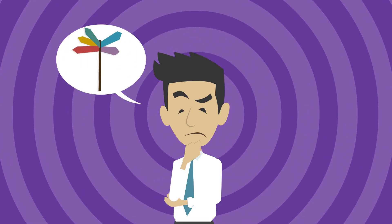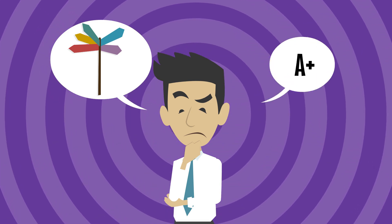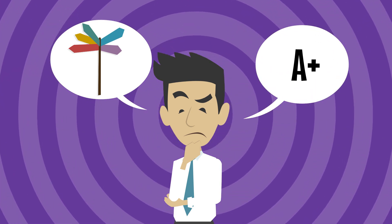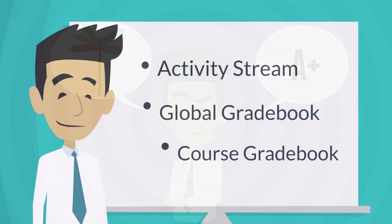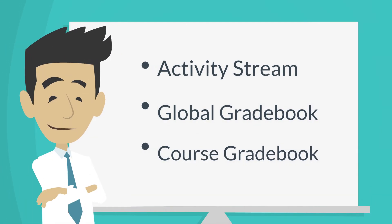There are many places in Blackboard that allow you to view your grades and see how you are doing. The three most common ways to view grades are through Activity Stream Notifications, the Global Gradebook, and the Course Gradebook.